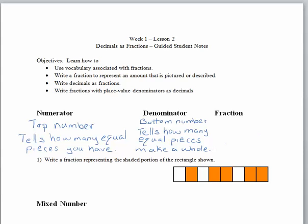The root for denominator is N-O-M, which means to name. When you talk about fourths, the denominator names the pieces. If you have three-fourths, you have three pieces, and each piece is called a fourth. The denominator is four, meaning it takes four equal pieces to make a whole.